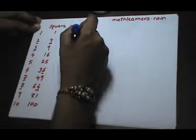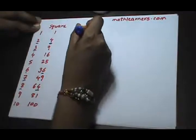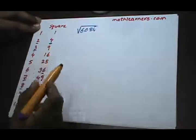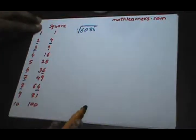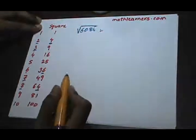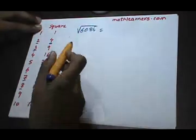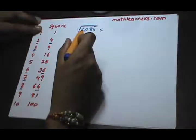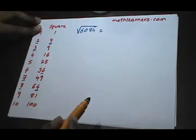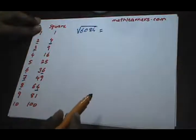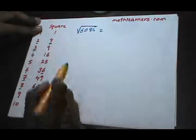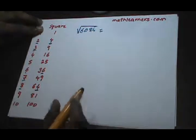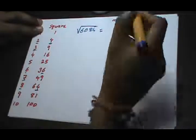Suppose we want to find the square root of 6084, and we are provided that 6084 is a perfect square. When we have an even number of digits, the square root will have n/2 digits. In this case there are 4 digits, so the square root will have 2 digits.